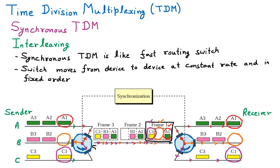The whole transmission is ongoing, and both switches are synchronized with each other — S1 and S2. If they are not synchronized, communication is not possible. If one switch is taking data from sender A, it should be sent to receiver A at the same time. That is how they are synchronized. The switch moves from one device to another at a constant rate in a fixed order, and this process is called interleaving.